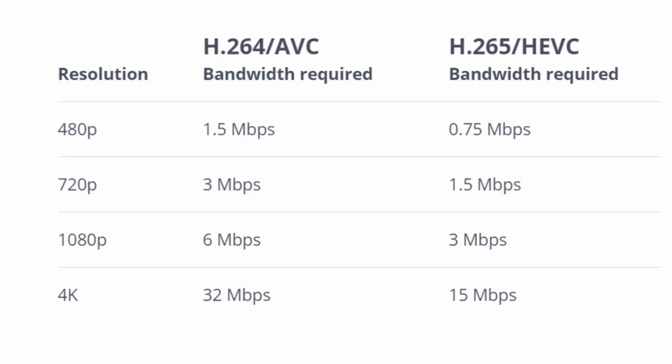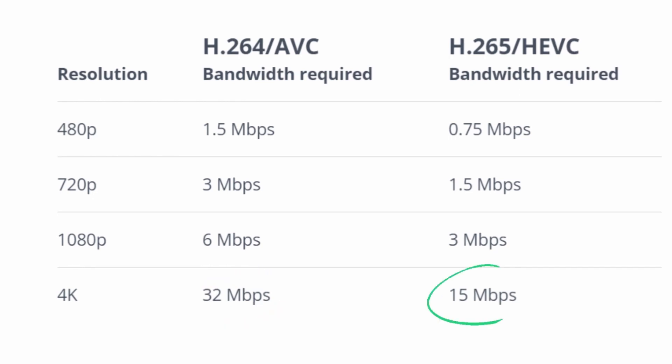The difference boils down to this: H.265 is way more efficient than H.264, resulting in video files that are pretty much the same quality but about half the size. Just look at this chart — 4K video is a whopping 32 megabits per second to stream or record with H.264, versus just 15 with H.265.